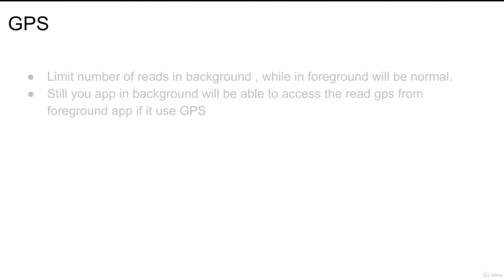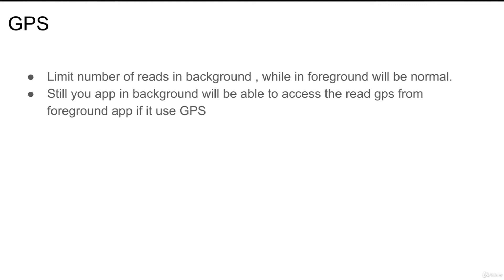What about GPS? In Android O you have a limited number of GPS reads when your application is in the background. If your application is in the foreground — like a user has Google Maps open — you still have unlimited access to GPS values. But if your application goes to the background, you have a limited number of GPS accesses and then you cannot read anymore in Android O. In previous versions before Android O, you can still read GPS values freely whether your app is in the foreground or background. Also, if you have exceeded your GPS limit but another application is reading GPS in the background, your application can still use the values that other app has already read.